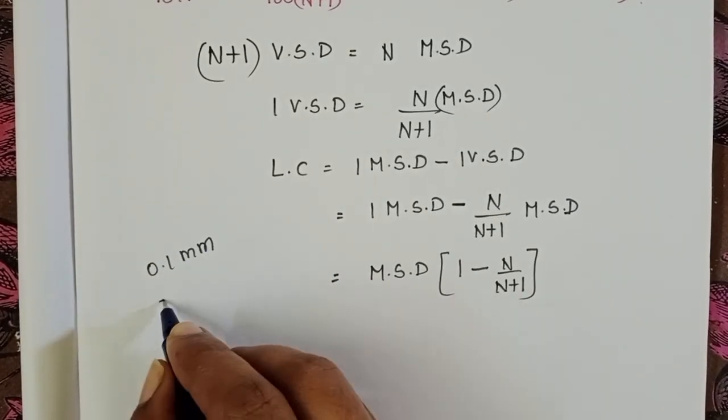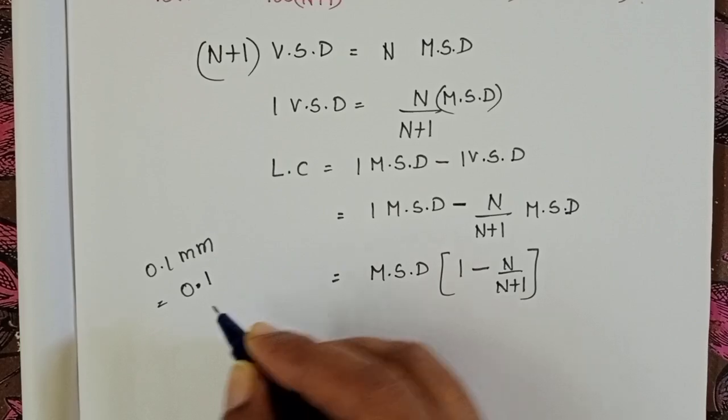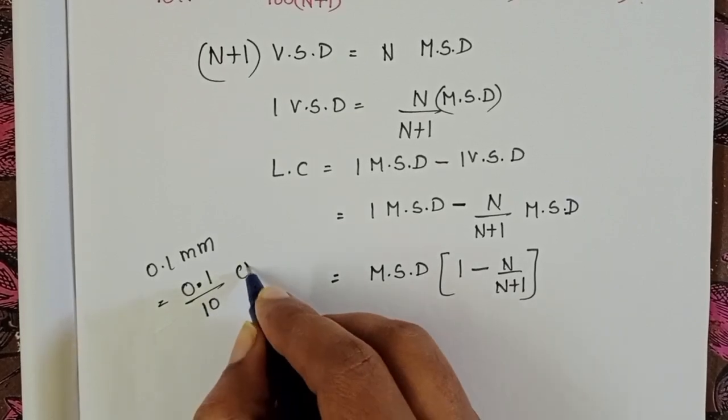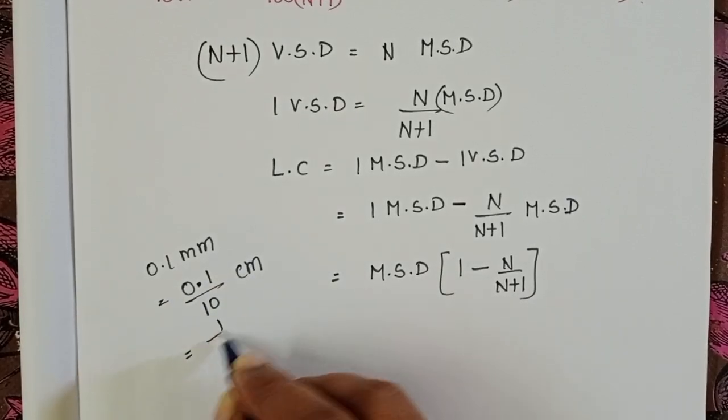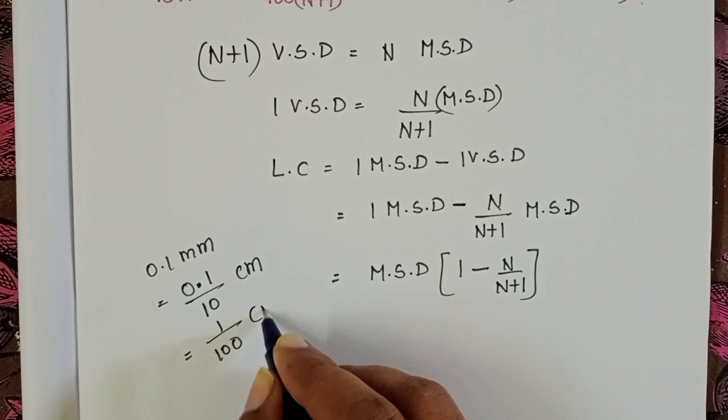Convert into cm. 0.1 by 10 cm, that equals 1 by 100 cm.